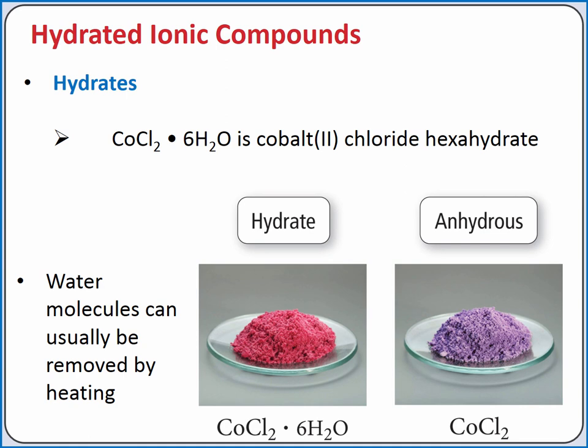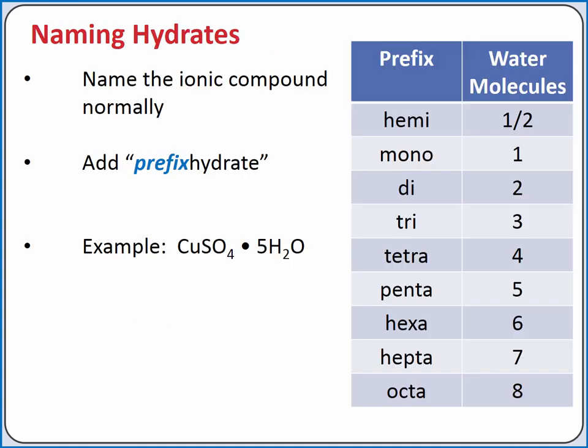Hydrates are ionic compounds that have a specific number of water molecules associated with each formula unit. The water molecules can typically be removed by heating. For example, cobalt(II) chloride hexahydrate has 6 water molecules associated with each formula unit and is a reddish color. When heated, the water molecules can be removed to leave just cobalt(II) chloride, which changes to a purple color. When naming hydrates, we name the ionic compound normally and add hydrate to the end with a prefix indicating how many water molecules are associated with each formula unit. Prefixes range from hemi for one-half to octa for 8.